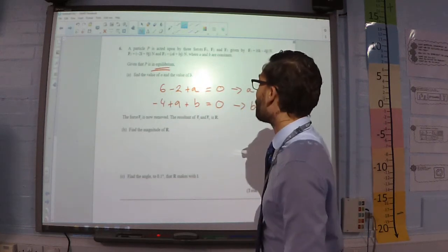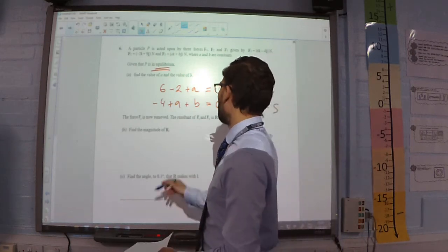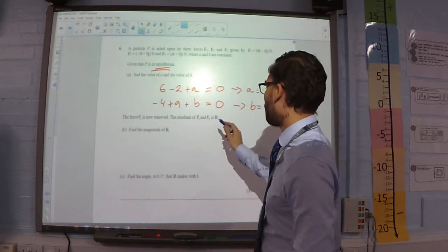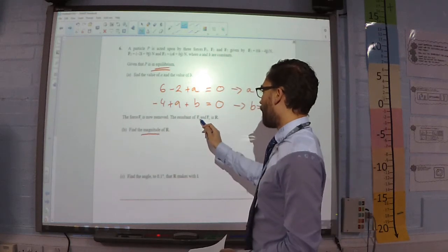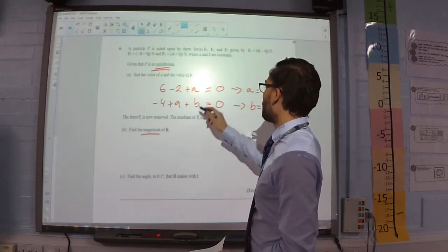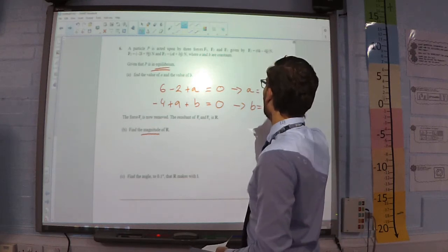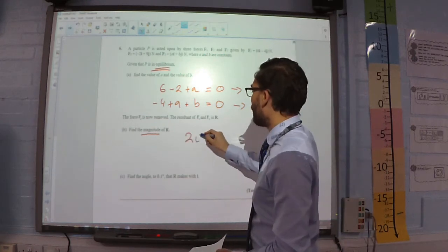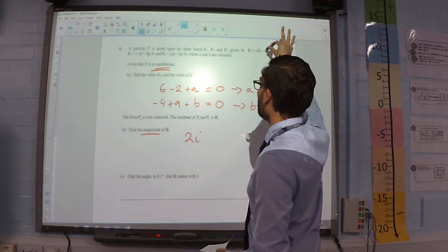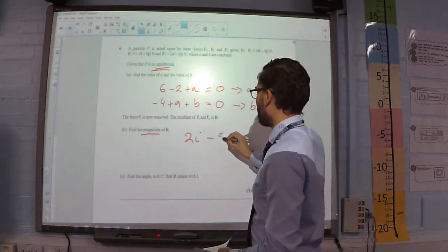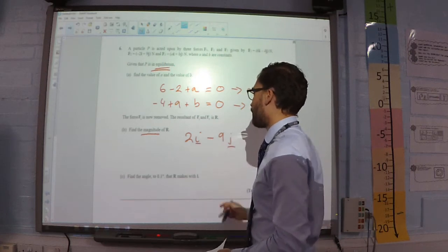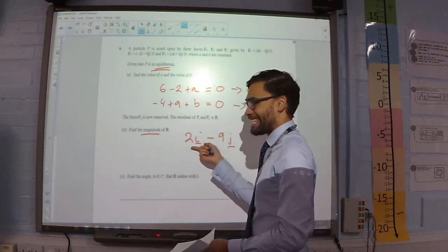The force F2 is now removed. The resultant force of F1 and F3 is R. Find the magnitude of R. So, R is F1 plus F3. So, that is going to be 6 minus 4, which is 2i. And this is going to be negative 4 and negative 5. So, that will be negative 9j. So, F1 plus F3 is this.